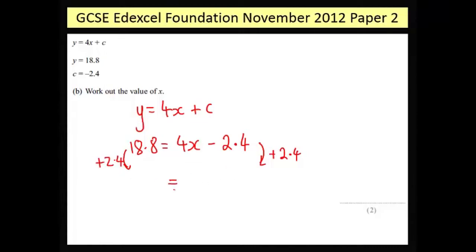If you add 2.4 to this left-hand side you get 21.2, and if you add it to this side you just get 4x because this negative 2.4 cancels out with the positive 2.4. The thing to do next is divide both sides by 4.